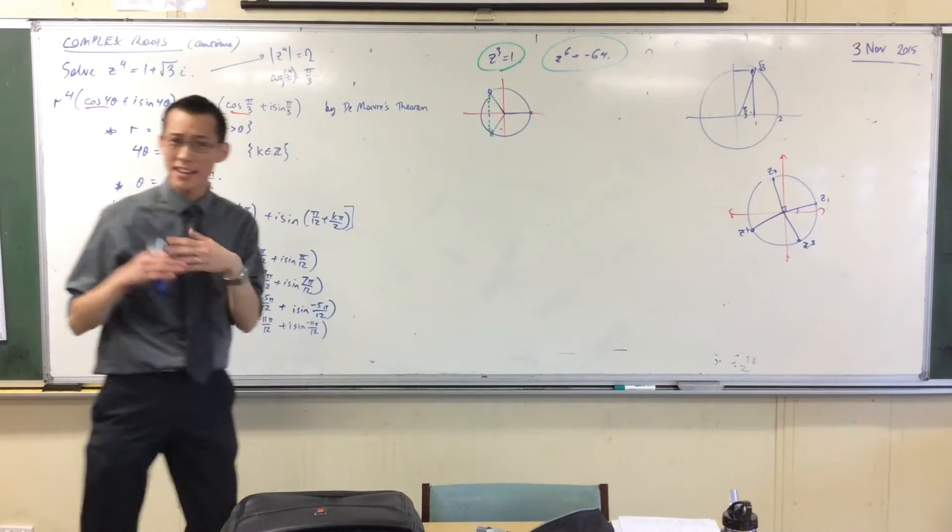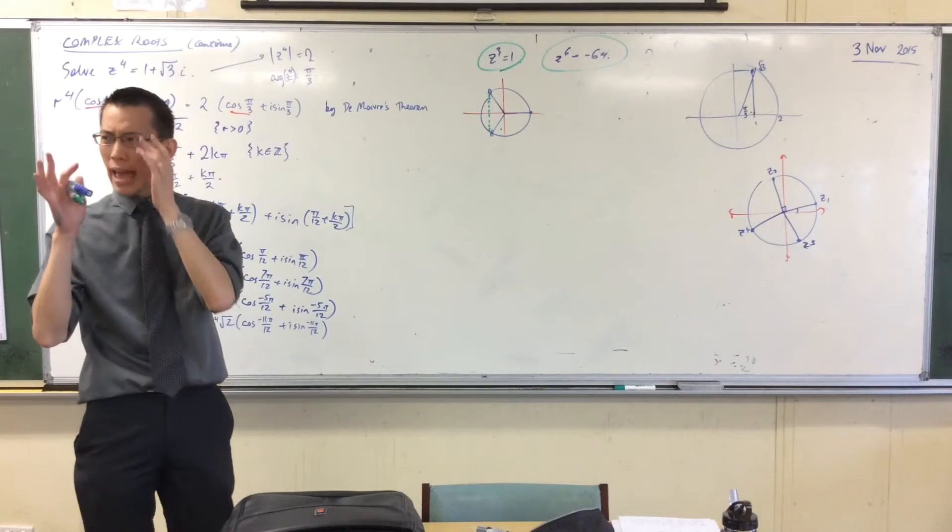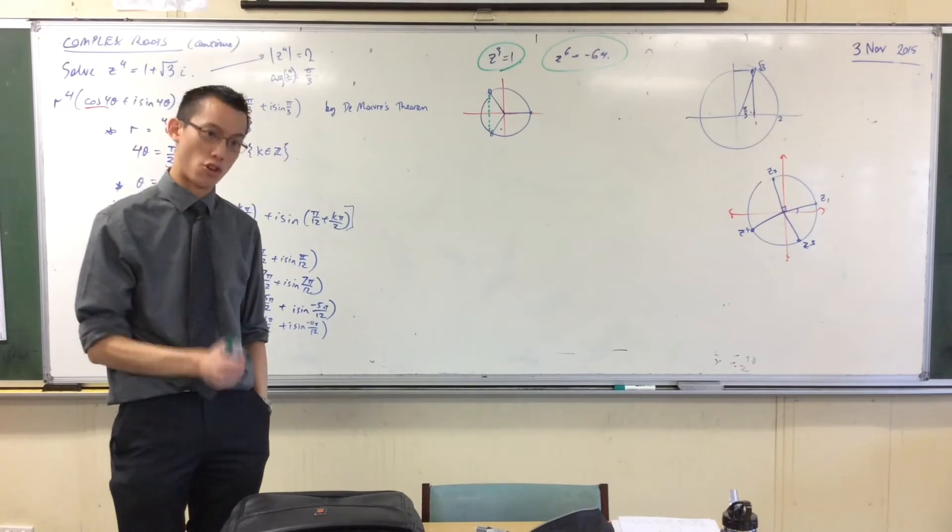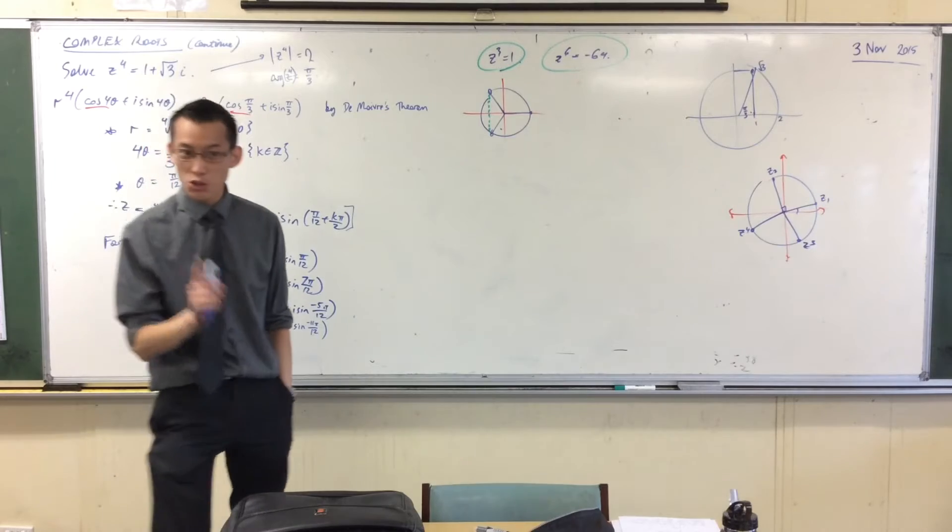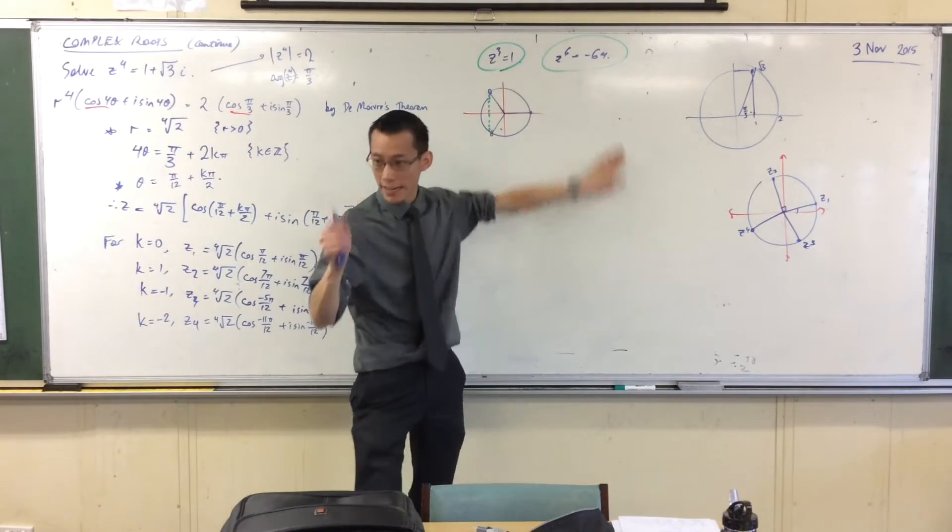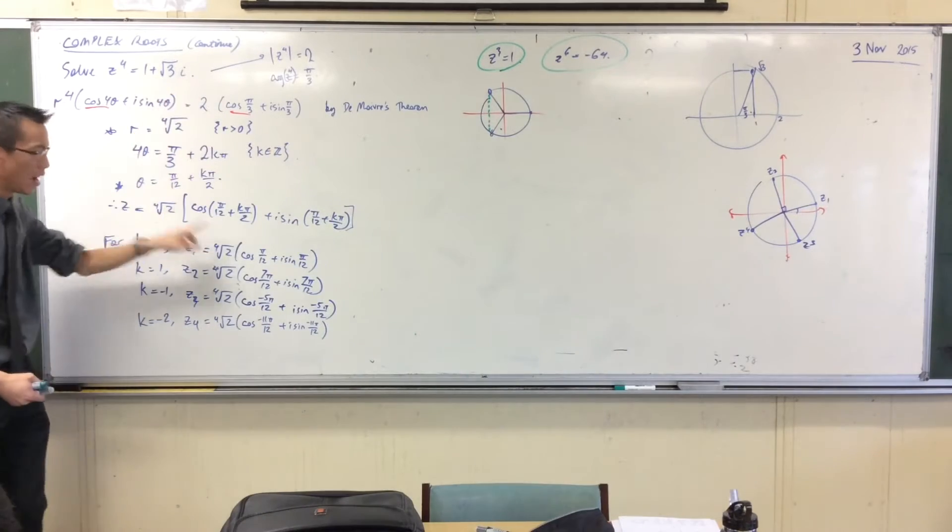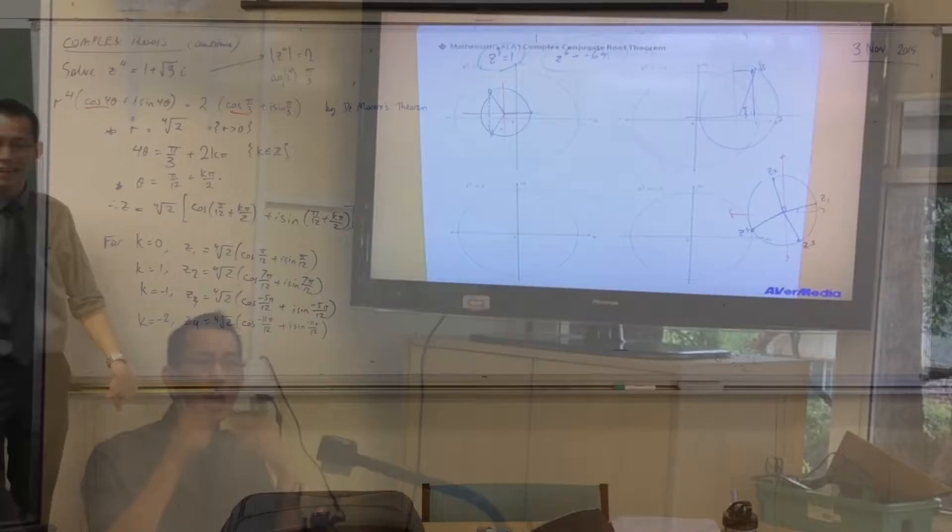I know, you have a look and you can see the coefficients of these polynomials, right? This is z cubed minus one, and then this is z to the sixth plus 64. Do you notice there are only real numbers? There are no i's. As soon as you add an i, you get things that are off axis, and they don't line up perfectly anymore.